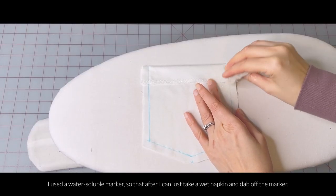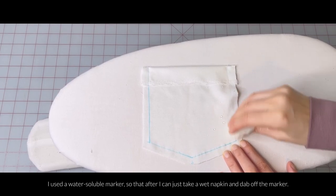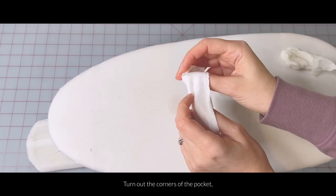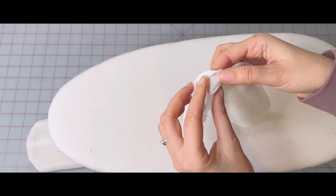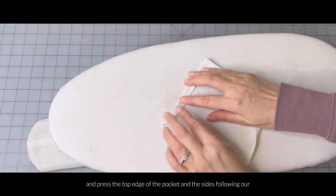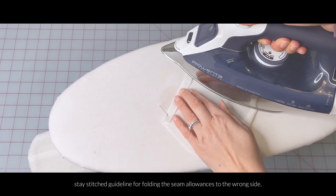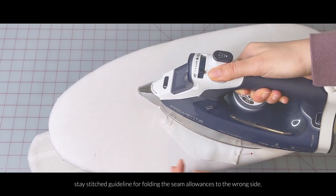Because I used a water soluble marker here, I can just take a wet napkin and dab off the ink. Turn out the corners, and then press the top edge of the pocket and the sides following our stay-stitched guideline for folding the seam allowances to the wrong side.